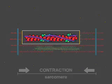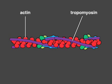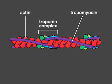This is because myosin binding sites on the actin filaments are all covered by a rod-shaped protein called tropomyosin. A calcium-sensitive complex, called troponin, is attached to the end of each tropomyosin molecule.